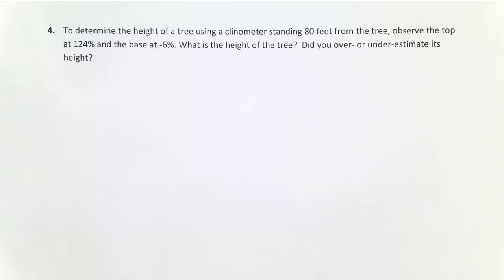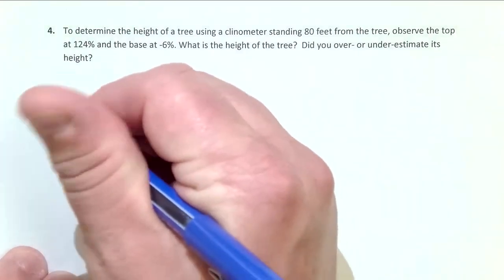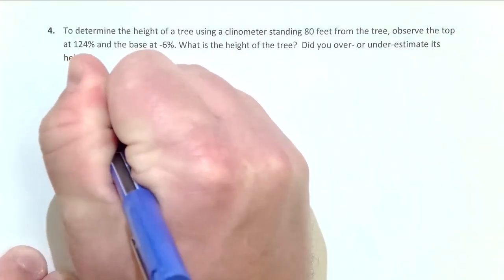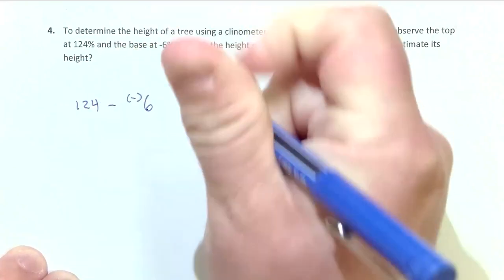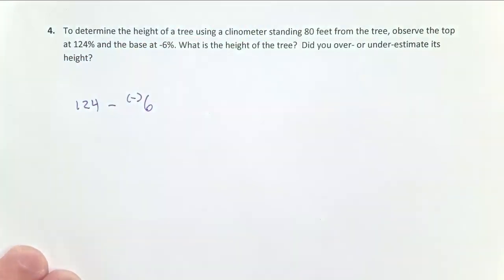So with the clinometer we always take our up angle and subtract our down angle, so here our up angle is 124 minus a negative six because our down angle is negative six percent. If you're on flat ground and your eye is above the base of the tree, that should always be a negative number.